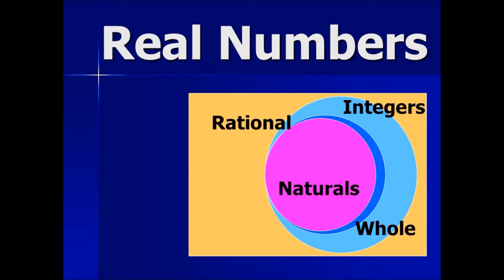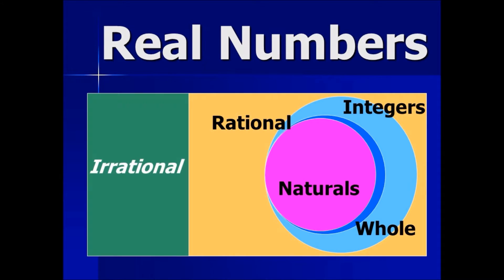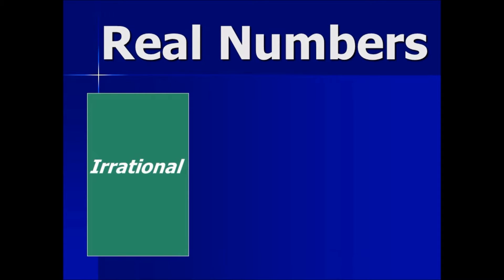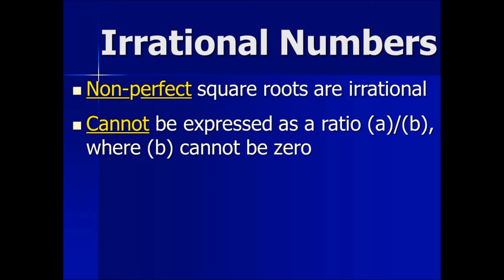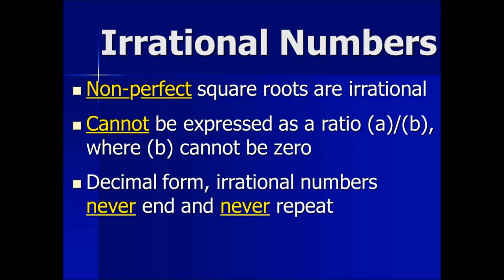Now, any real number that cannot be defined as a rational number is an irrational number. To define irrational numbers: they are non-perfect square roots, cannot be expressed as a ratio A over B where B cannot be zero, and in decimal form, irrational numbers never end and never repeat.